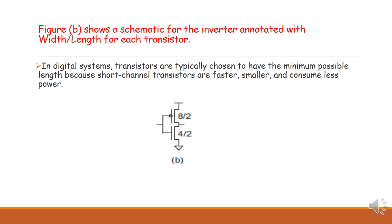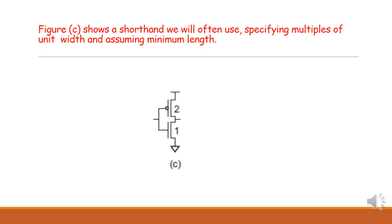This figure shows the schematic for the inverter annotated with width-by-length for each transistor. In digital systems, to achieve high speed we need minimum length transistors, that is short channel transistors, which are faster, smaller, and consume less power. The PMOS transistor has a size of 8 by 2 and the NMOS transistor has a size of 4 by 2. The inverter shorthand uses PMOS of relative size 2 and NMOS of size 1, since PMOS is double the size of NMOS.